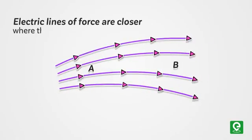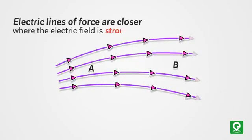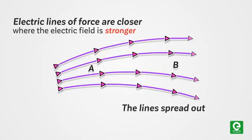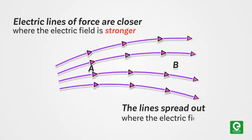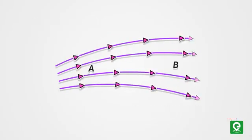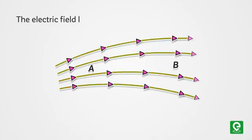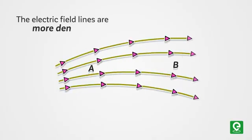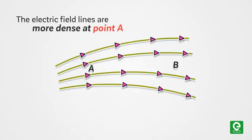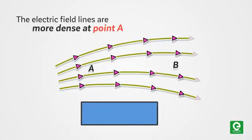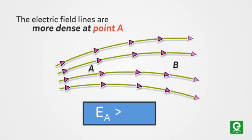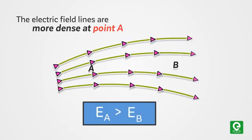Electric lines of force are closer and more crowded where the electric field is stronger, and the lines spread out where the electric field is weaker. Since the electric field lines are more dense at point A, the electric field strength at point A is greater than at point B.